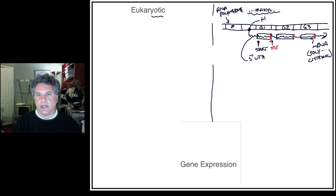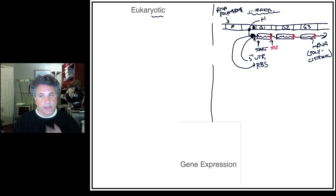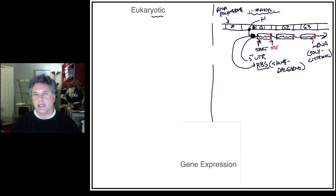Upstream of the first translation start site in the messenger RNA is a 5' untranslated region, which contains a sequence called the ribosome binding site. In prokaryotic messenger RNAs this is a sequence of nucleotides called the Shine-Dalgarno sequence, which is the point at which the ribosome will bind and begin translation at the first start site.